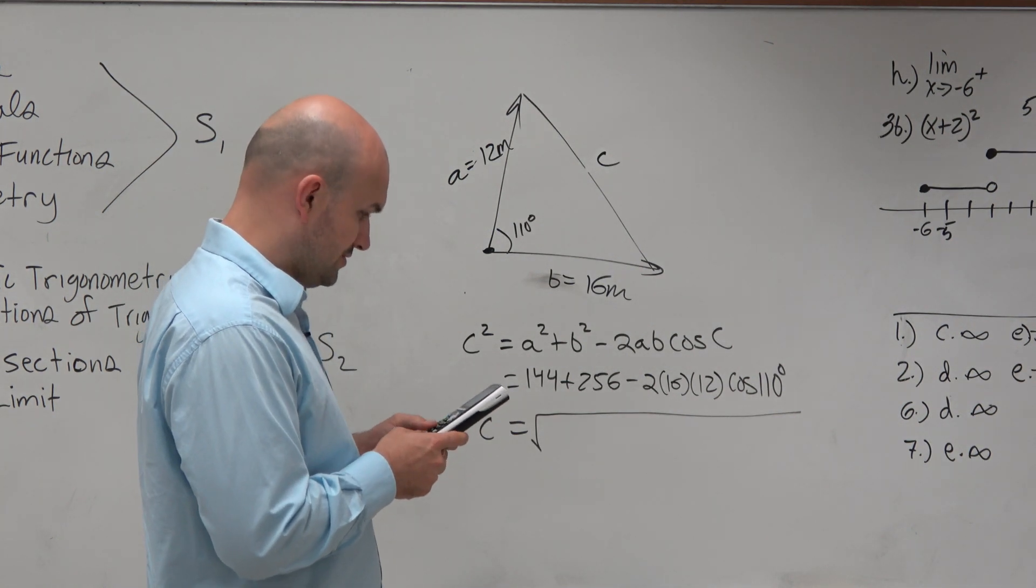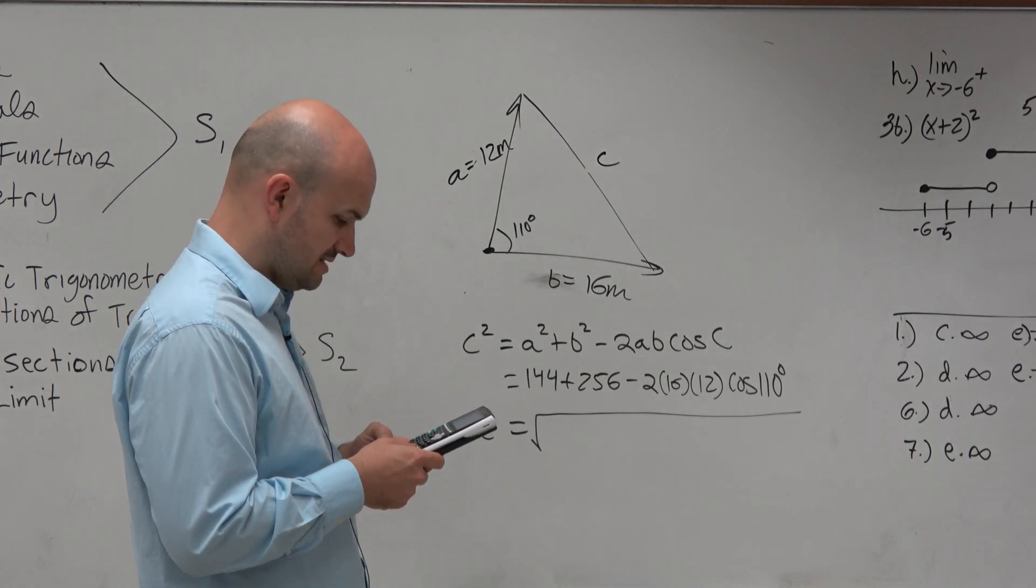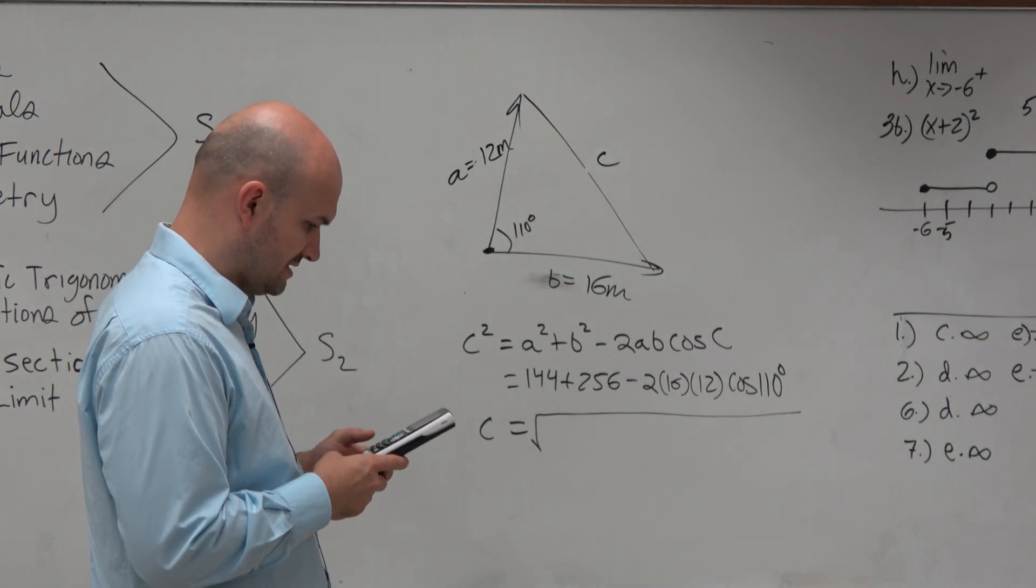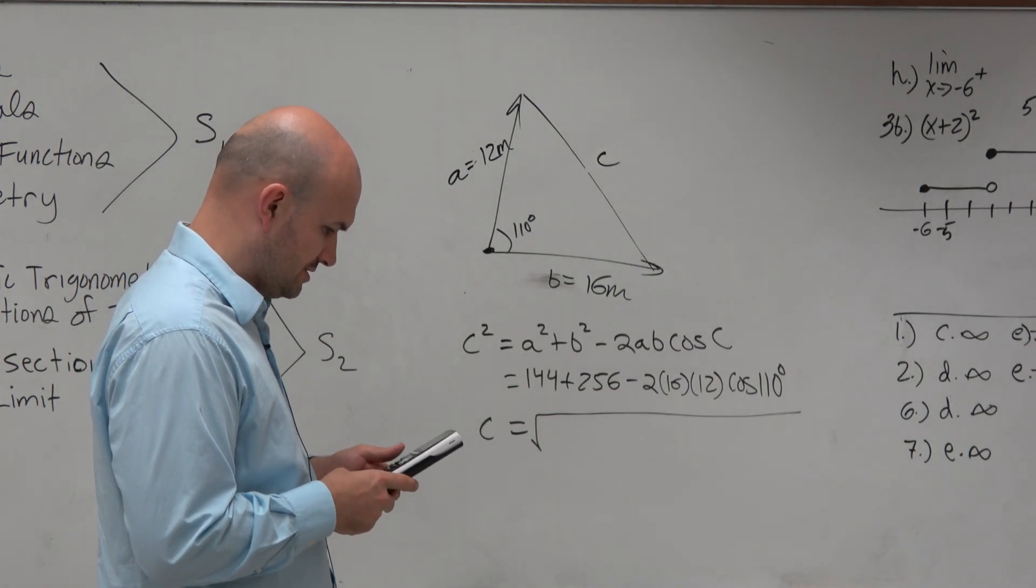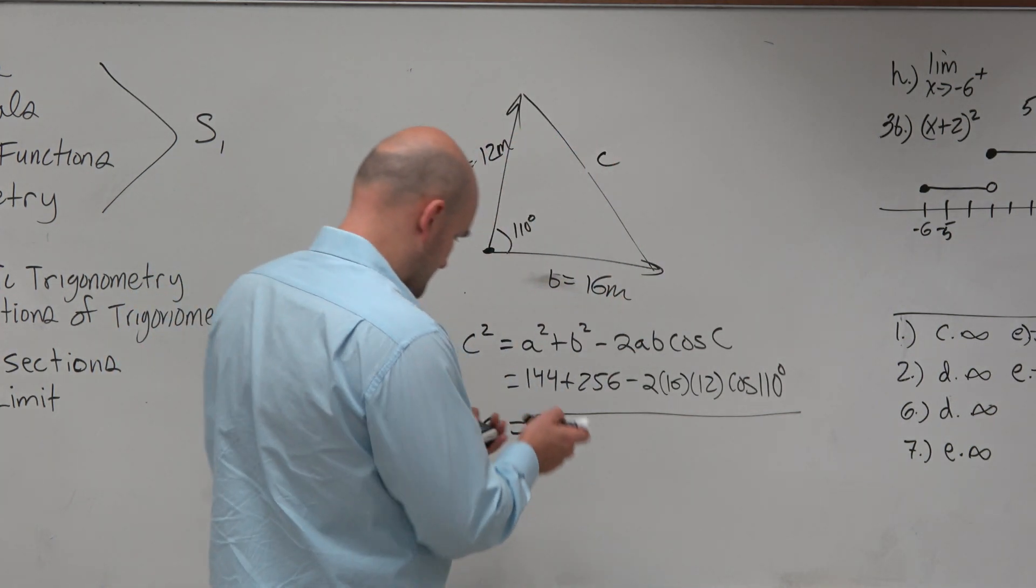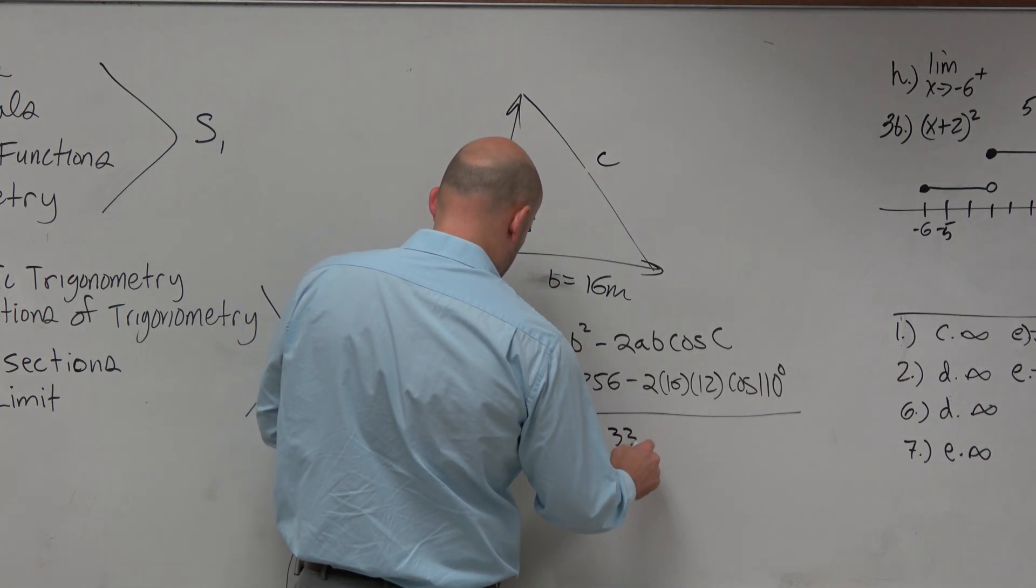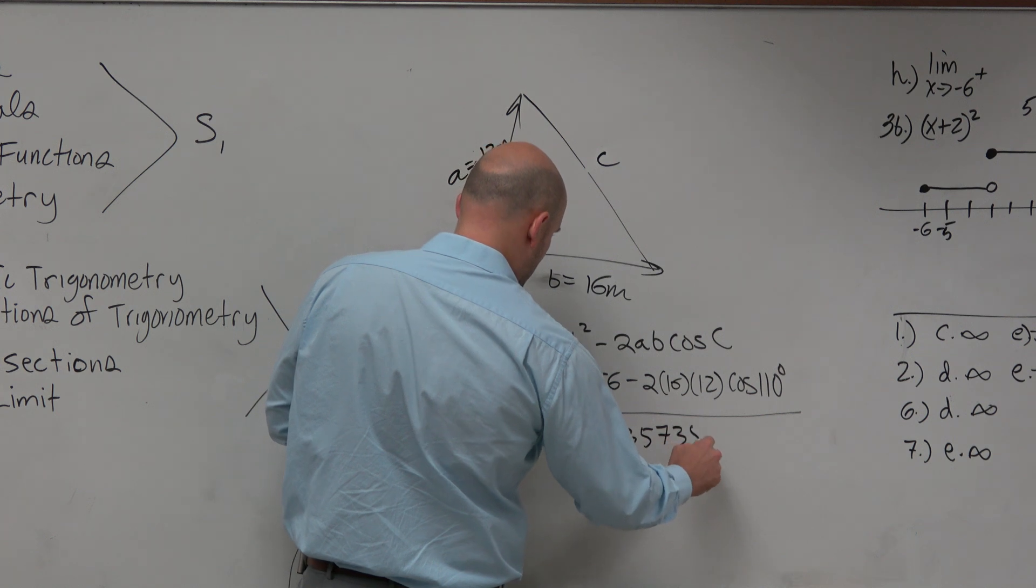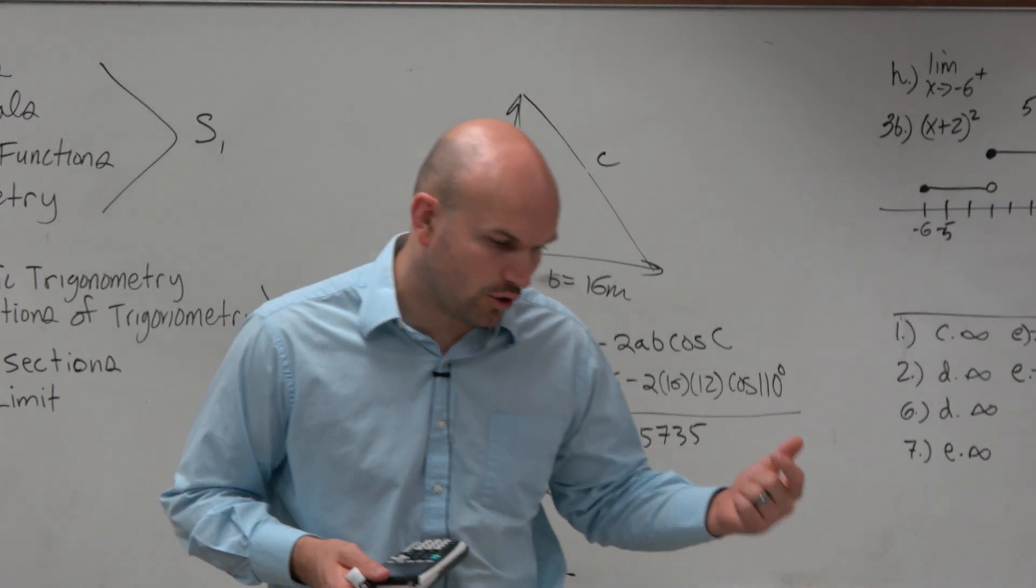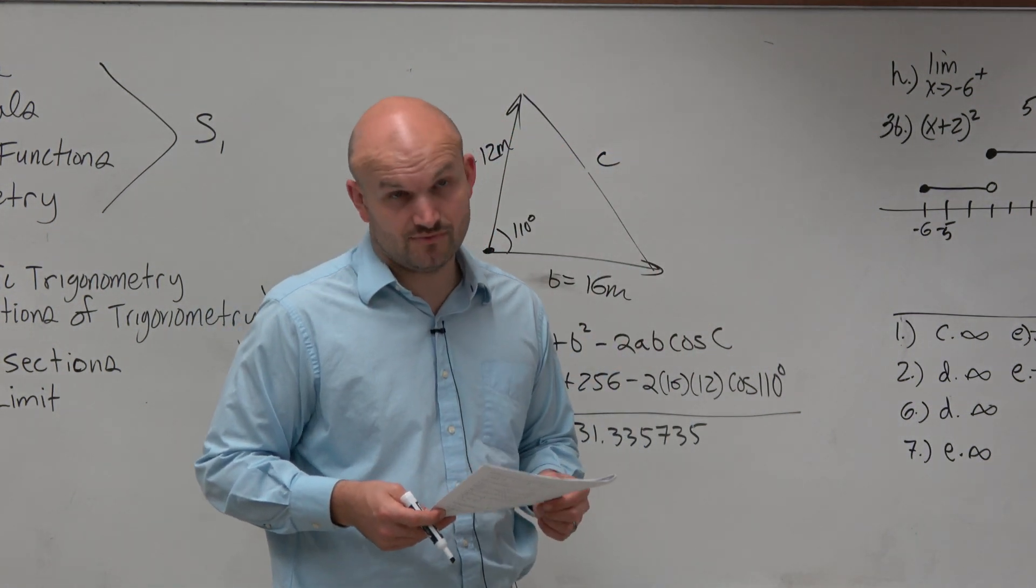Let's do cosine of 110 times 12 times 16 times negative 2, plus 144 plus 256, square root, answer. It doesn't make sense for us to have a negative. So I end up getting 531.335735, and then rounded to the nearest whole as the answer choice. Was 23 an answer? Yes, which is C.